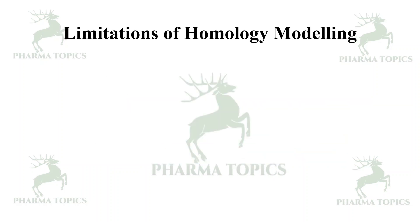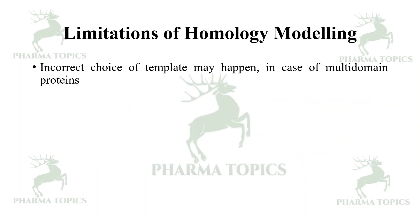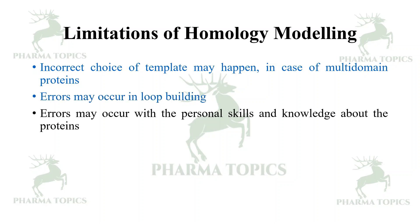Some limitations of homology modeling: incorrect choice of template may occur; in the case of multi-domain proteins, errors may happen in loop building; and errors may occur due to personal skills and knowledge about the proteins. This has been a brief explanation of homology modeling — I hope it will be useful for you.